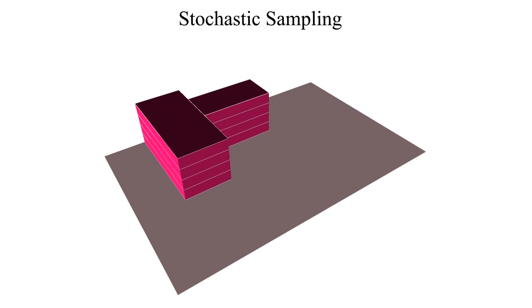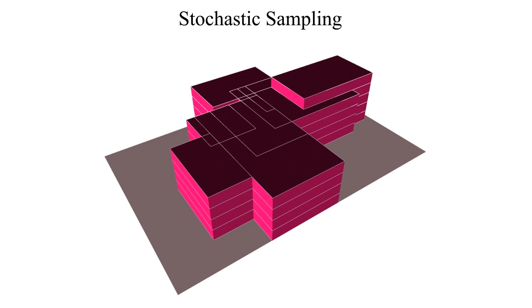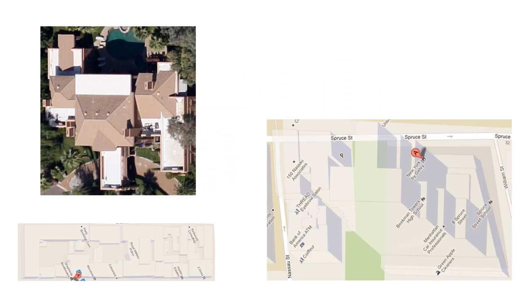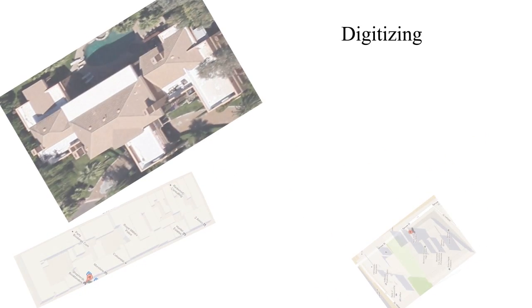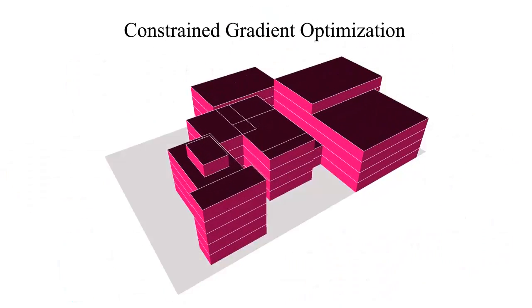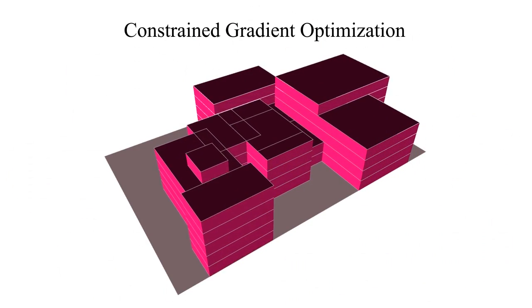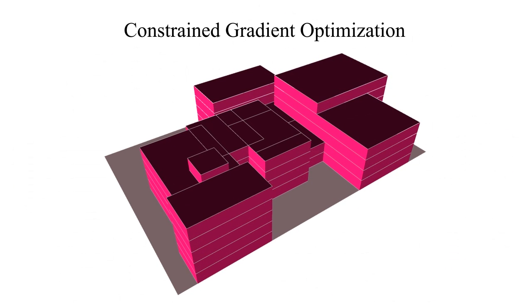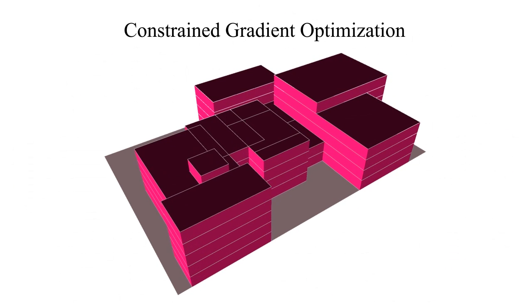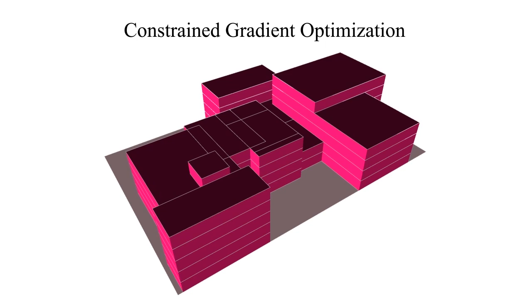The first step is to generate valid layouts using statistical sampling or digitising maps to replicate existing layouts. Sampled or digitised layouts are then further optimised using selected hard and soft constraints. We employ a constrained gradient descent method described in the paper.